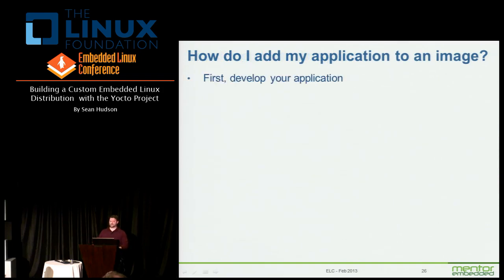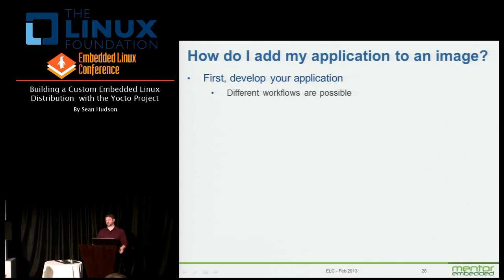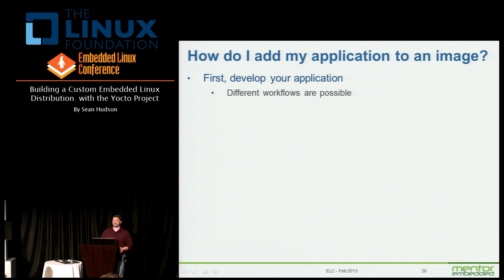How do I add something into my image that didn't exist before? The first thing you have to do is develop whatever your new application is — or it could be any module in the system, kernel or otherwise. There are a lot of workflows. You can do that in the temporary directory, as a completely different source repository manually populated in, or via NFS-mounting a local extraction of the root file system to your target and poking your binary in directly. When you're happy with it, commit it to source control and update your recipe.